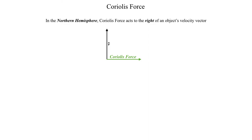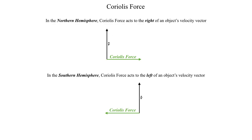Another property of the Coriolis force — which we'll substantiate with a mathematical derivation later on — is that in the northern hemisphere the Coriolis force primarily acts to the right of an object's velocity vector. So if you have a velocity vector pointing due north, the Coriolis force would be acting to the east. In the southern hemisphere it's reversed: the Coriolis force acts to the left of an object's velocity vector, so traveling due north would deflect the object to the west. At the equator, the Coriolis force is essentially zero, though there are some exceptions we don't generally need to worry about.